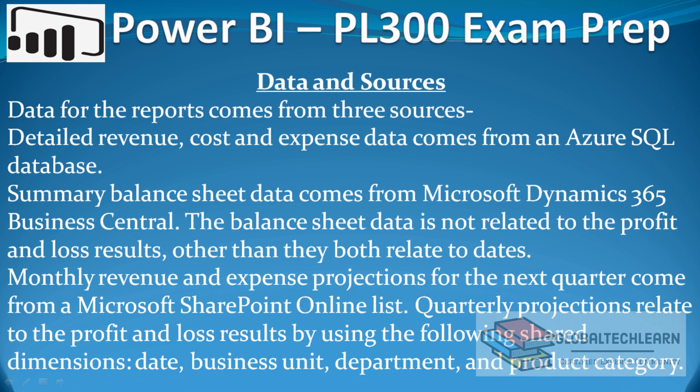Under Data and Sources Information, data for the reports comes from three sources. Detailed revenue, cost, and expense data comes from an Azure SQL database. Summary balance sheet data comes from Microsoft Dynamics 365 Business Central. The balance sheet data is not related to the profit and loss results other than they both relate to dates. Monthly revenue and expense projections for the next quarter come from a Microsoft SharePoint Online list.